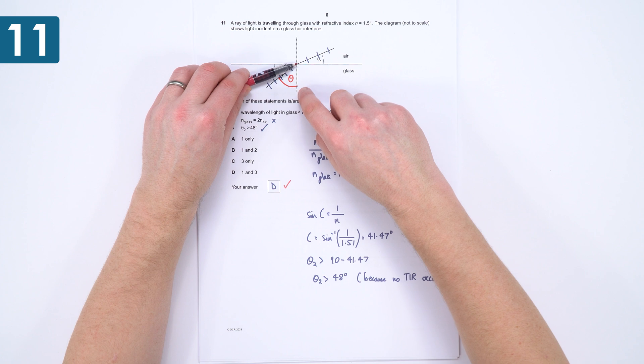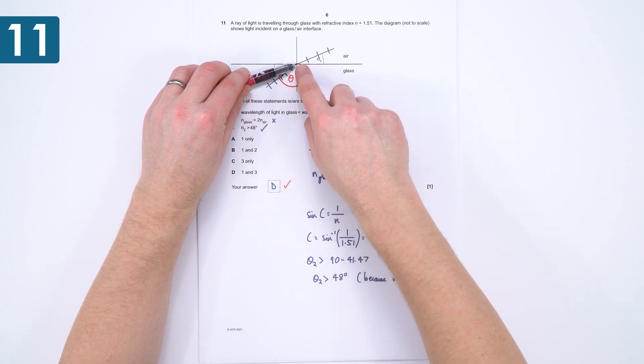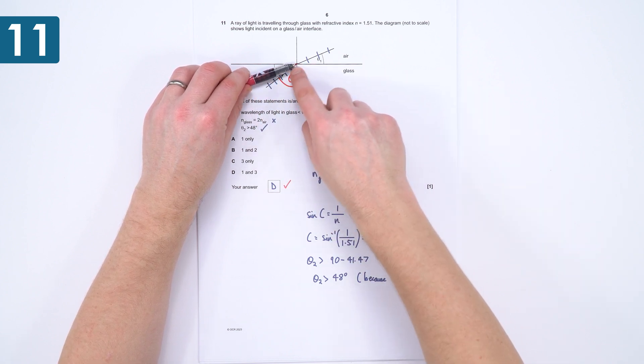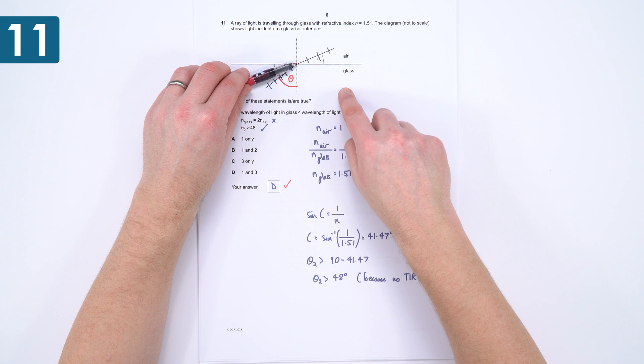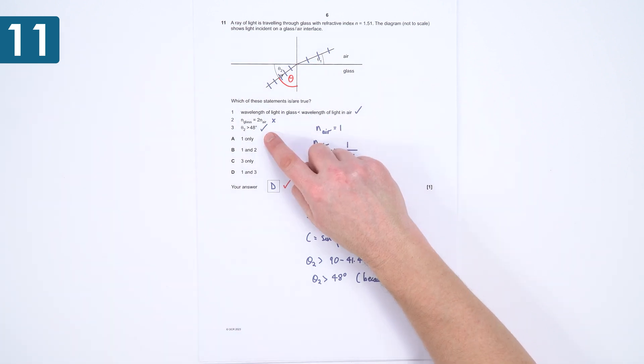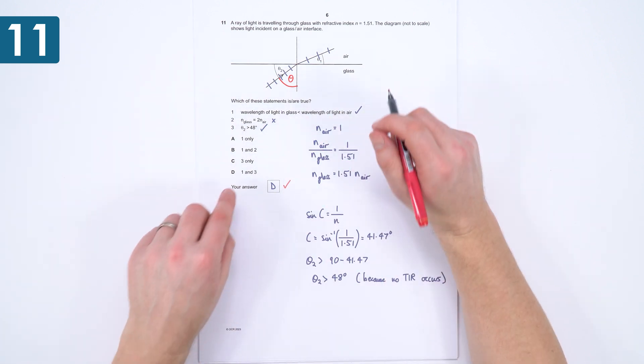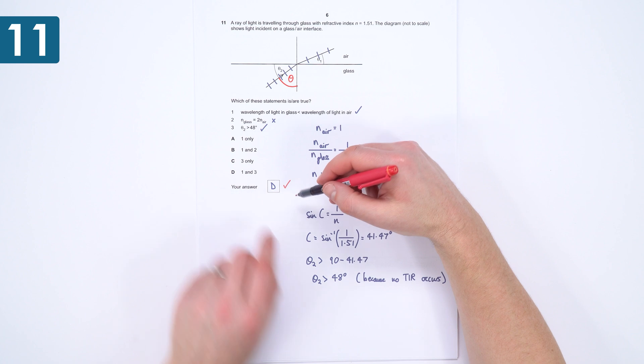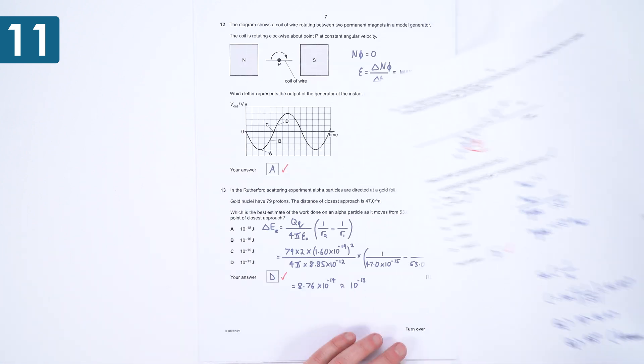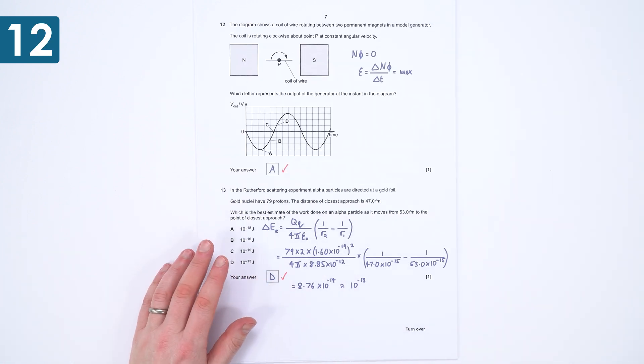It's only when the value of theta 2 is less than 48 that we then have an angle above the critical angle, and therefore we'd have this reflected ray of light on the inside. So that's actually a true statement. So the answer then is 1 and 3 are correct, and the answer is D. A tricky one that caught out lots of people, as did this question here.